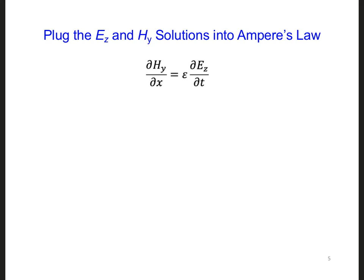See now if you can go through the same process, but you're going to start with Ampere's law instead of Faraday's law. Plug in the analytical electric and magnetic field solutions into this analytical 1D form of Ampere's law and then solve for H y naught.